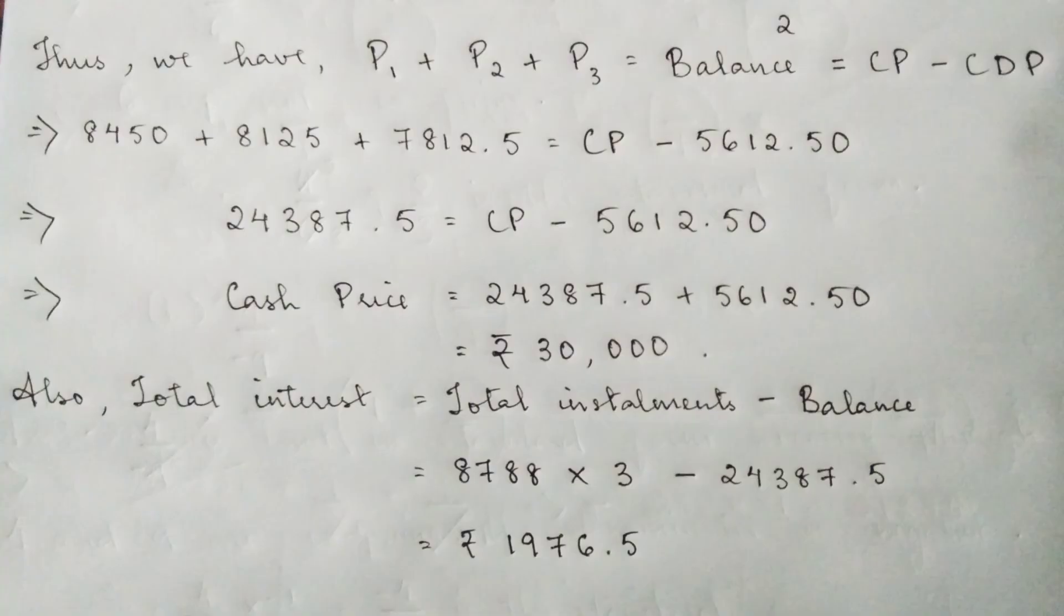Next, the question is also asking us to find the total interest. The formula is total installments minus balance or loan. So you get rupees 1976.5 as the total interest.